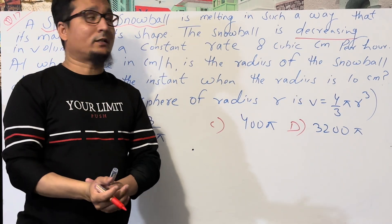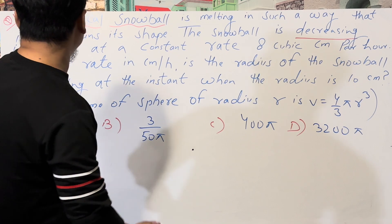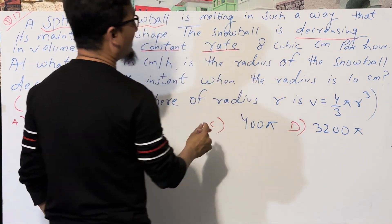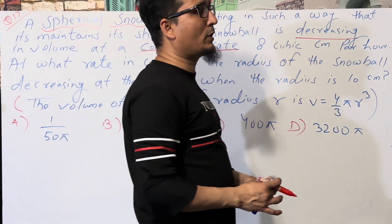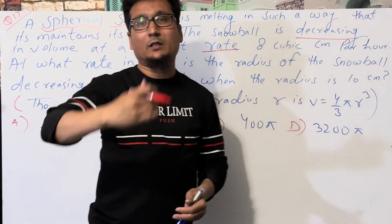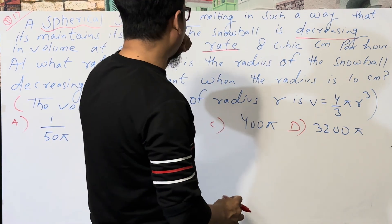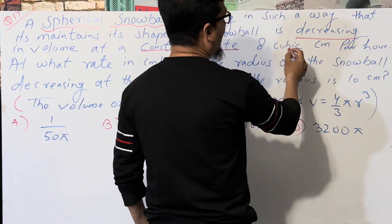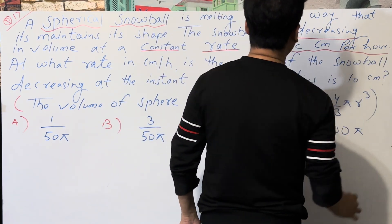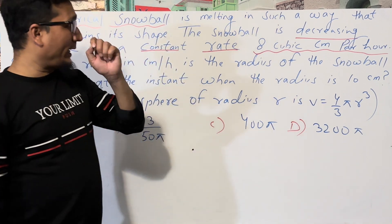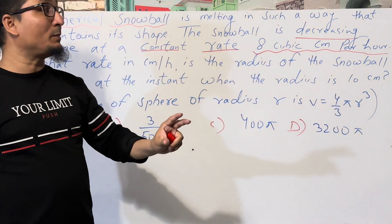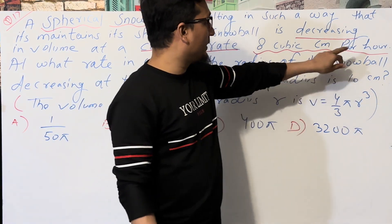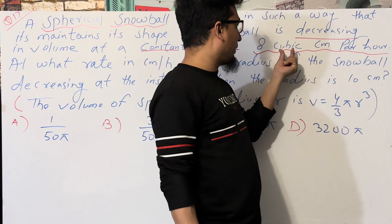The snowball is decreasing at a constant rate, meaning the derivative with respect to time is constant. The numerical value given is 8 cubic centimeters per hour — so in one hour it decreases 8 cm³. This means dV/dt is our key quantity, where time is in hours and volume is in cubic centimeters.